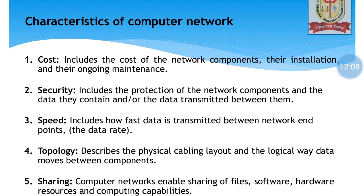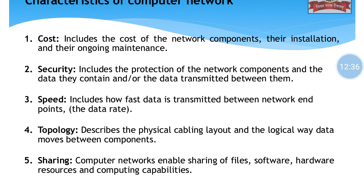So these are the features of computer network. Cost is low because we would not require 20 printers for 20 PCs — only one is sufficient. Security is a concern because data passes through the network from various computers. Speed is fast and depends on bandwidth. Topology is the designing of various networking components in a computer network. And finally, sharing — we could share printers, softwares, hardware, and so on.